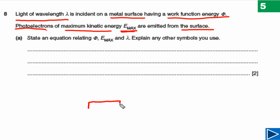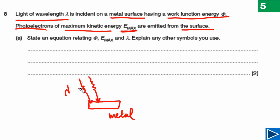Let's sketch this so we can see a clear picture of what is happening. This is our piece of metal, and light is incident on it. The wavelength of this light is lambda, and light consists of photons. We can draw a small box to show that a photon is a packet of energy of electromagnetic radiation. We can also draw small circles to show electrons at the surface.